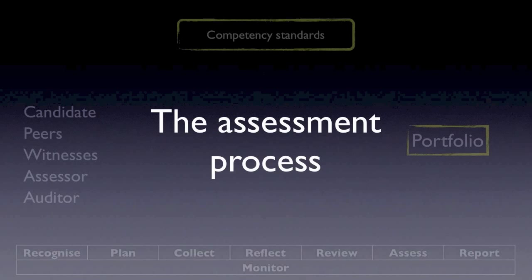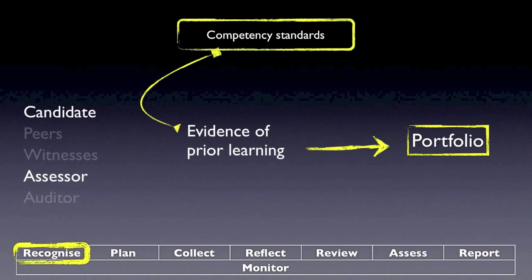Let's look at the whole process in detail. The process involves candidates, peers, witnesses, an assessor, and an auditor. At the very first stage — the stage of recognition — we need to recognize what competencies the person already has. Before defining any exercise or activity, you need to know what the person already knows, so you need to do what we call recognition of prior learning. You will use the competency standards, look at what evidence is required, and the person will collect existing evidence into their portfolio.